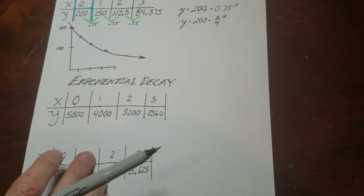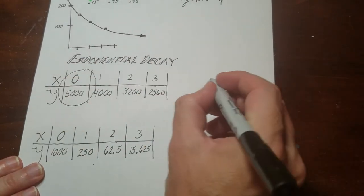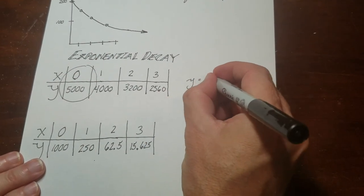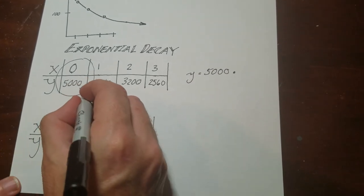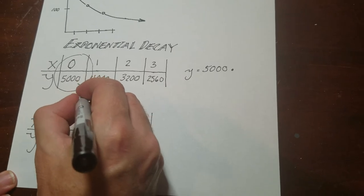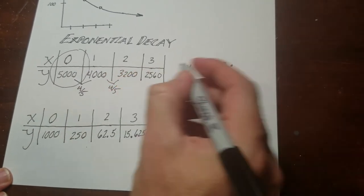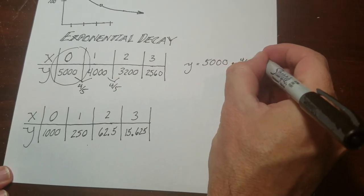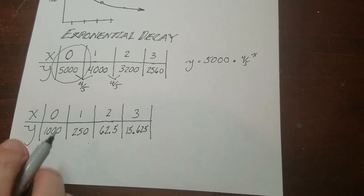So let's try a couple more here. So on this one here, it looks like I have initial value of 5,000. And then I'm going to divide here. So I could tell already this is 4 fifths. This is also 4 fifths. So it's multiplying by 4 fifths. And then my x goes there.